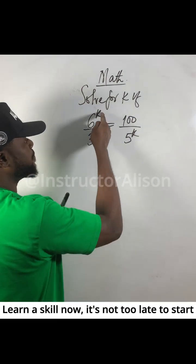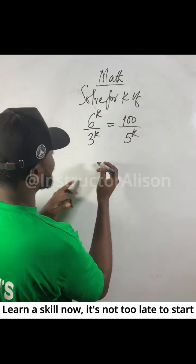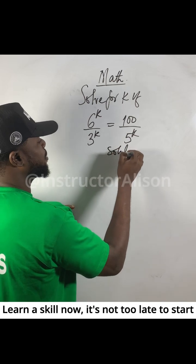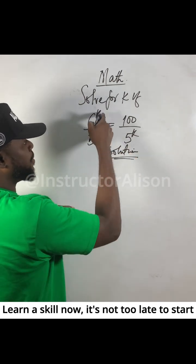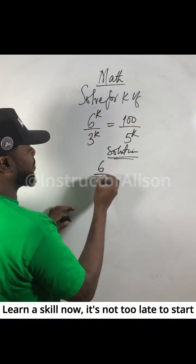The rule of indices applies when you get similar powers—the division rule. The first thing we do is, since the power is the same, divide six over three and take one of the powers.